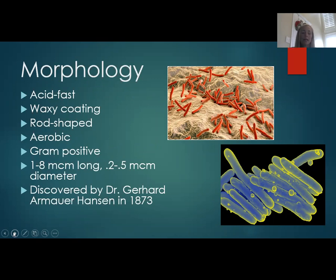M. leprae is acid fast, meaning it's absorbent of acid used to stain bacteria and the color doesn't come back off. This happens because its cell wall has a lot of mycolic acid and is waxy, typical of mycobacterium, due to a lot of complex lipids that are bound together using covalent bonds that bind at room temperature.